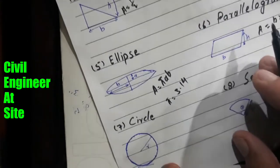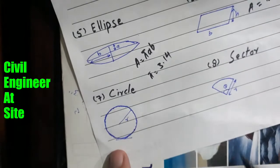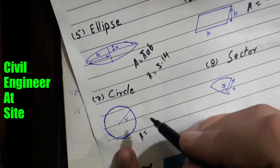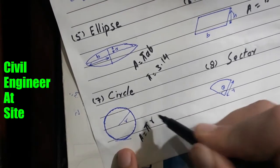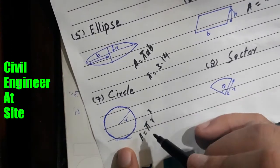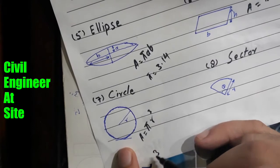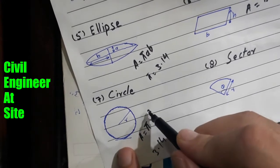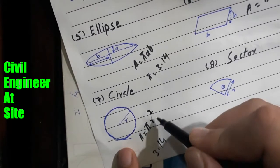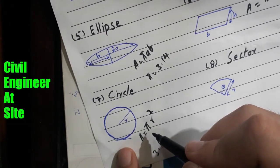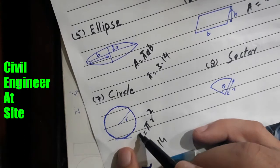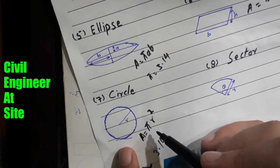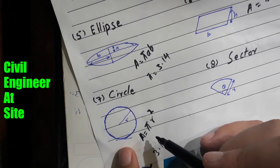The seventh shape is the circle. For a circle, the area formula is A = π × r², where pi is a constant whose value is approximately 3.14, and r is the radius of the circle. When we put the value of the radius and multiply it by 3.14, it will give the area of the circle.